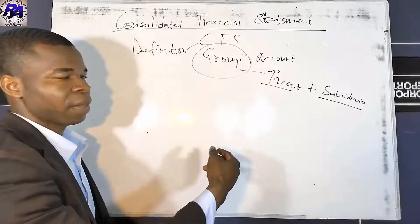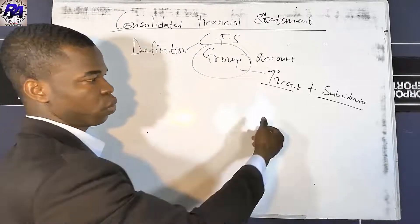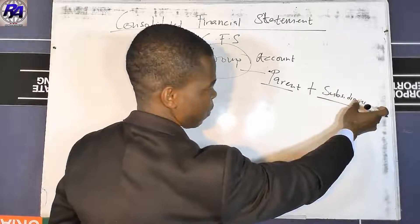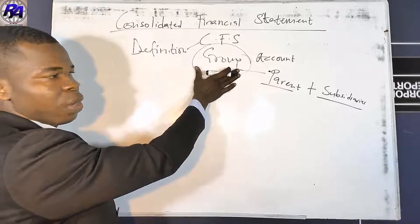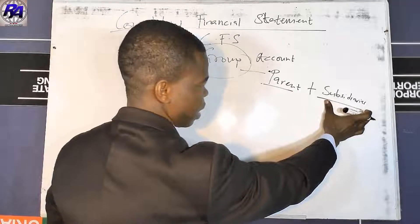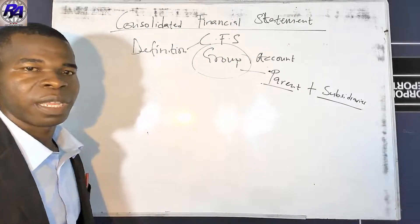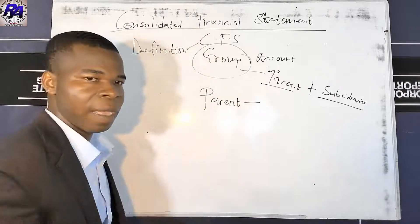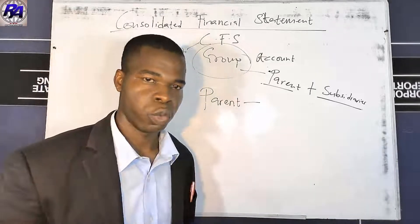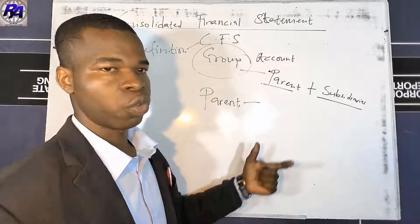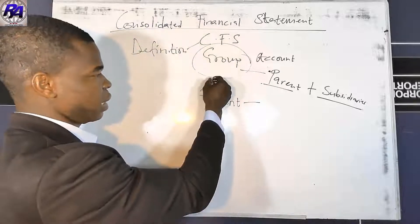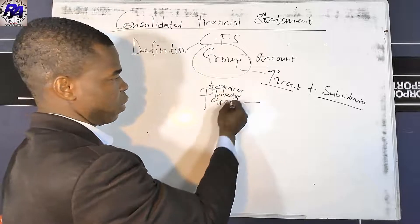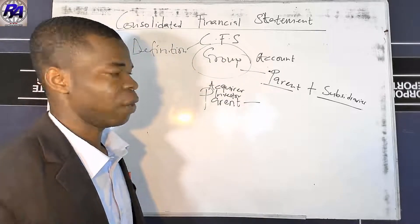We can have more than one subsidiary in a group. A parent simply means an entity that has obtained control over another entity. Another name for parent is the acquirer or the investor — the one purchasing the other entity is referred to as the parent.